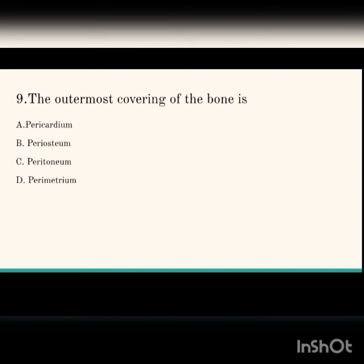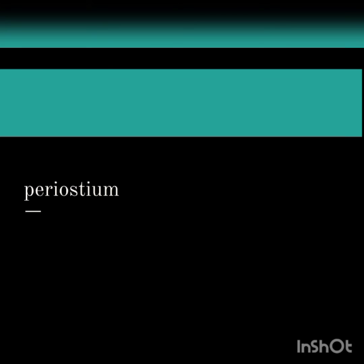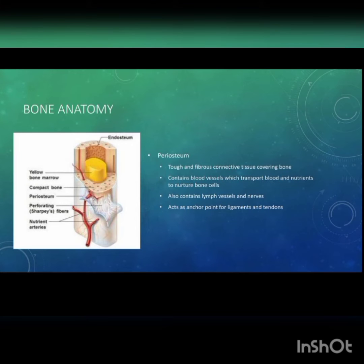Next question: the outermost covering of the bone. The options are pericardium, periosteum, peritoneum, and perimetrium. Pericardium is the outermost layer of the heart; peritoneum covers the abdominal organs; perimetrium is the external layer of the uterus. The outermost covering of the bone is periosteum, which is the hardest layer of the bone.